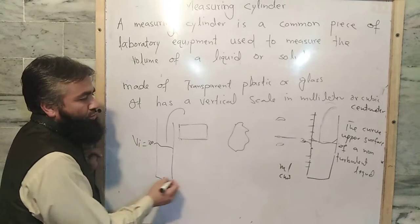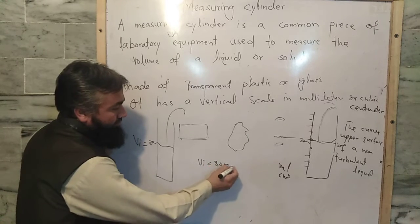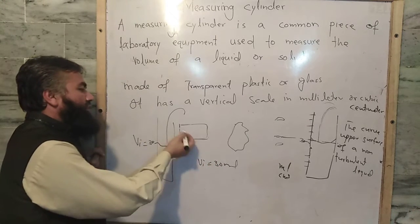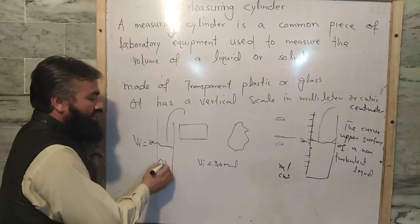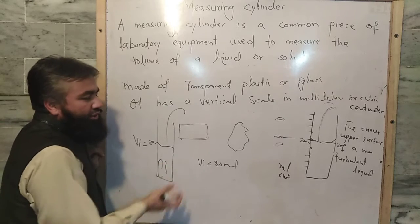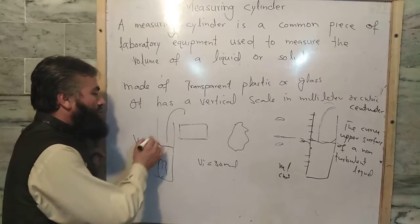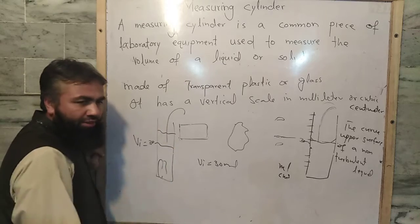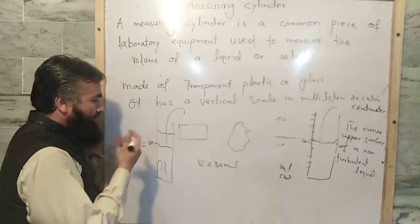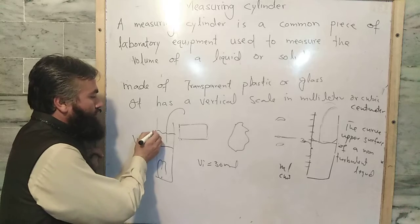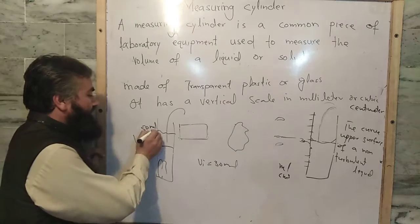Suppose the initial volume is 30 milliliters. After that, we will put the irregular solid object into the measuring cylinder. You will see a rise in the volume of the liquid. Suppose the final volume of the liquid is 50 milliliters.